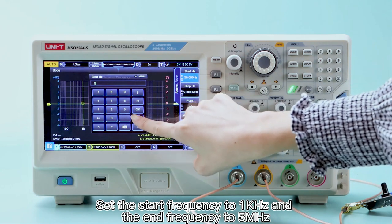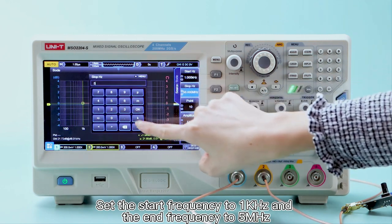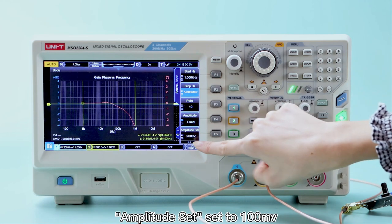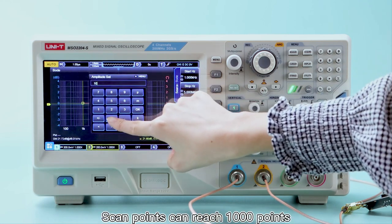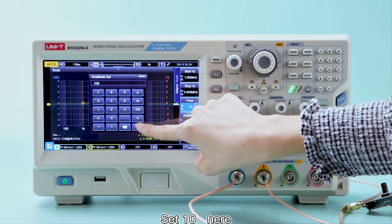Set the Start Frequency to 1 kHz and the End Frequency to 5 MHz. Amplitude Set to 100 mV. Scan points can reach 1000 points, save 10 here.